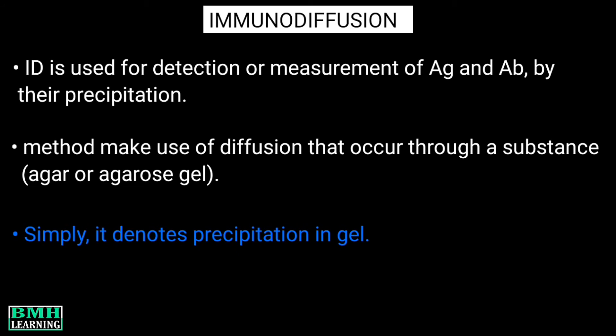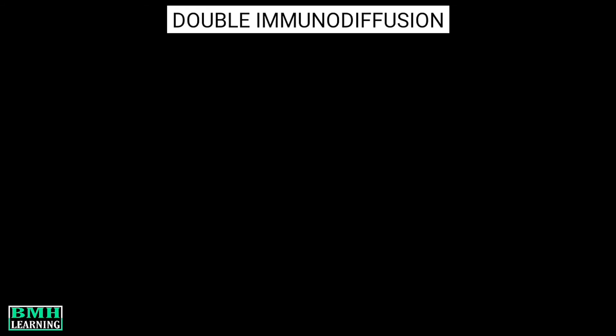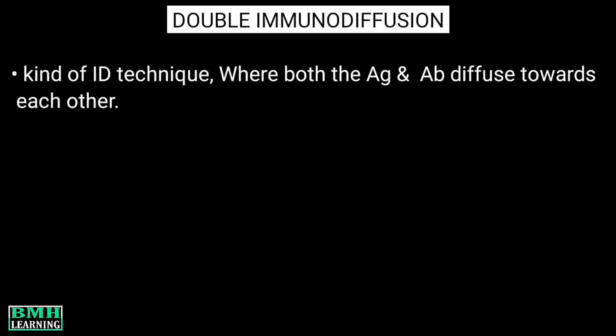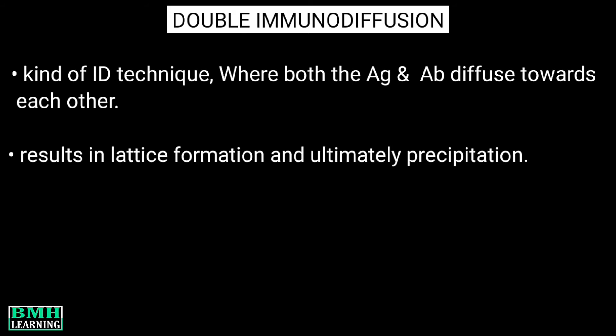Now, what about double immunodiffusion? It's a kind of immunodiffusion technique where both the antigen and the antibody diffuse towards each other and result in lattice formation and ultimately precipitation.